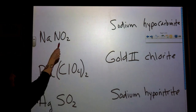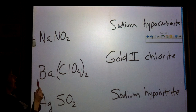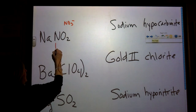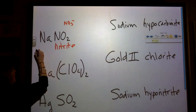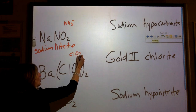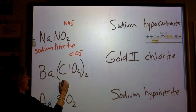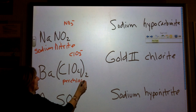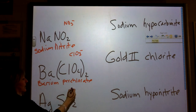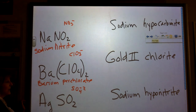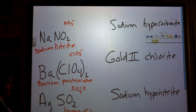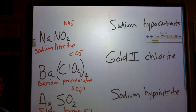Let's try some examples. This looks kind of like nitrate, but it's one less oxygen, so this must be nitrite — and that's sodium nitrite. This looks kind of like chlorate but has one more oxygen, so this must be perchlorate — and that's barium perchlorate. This looks kind of like sulfate except it has two less oxygens, so this is going to be hyposulfite — and this is silver, so silver hyposulfite.